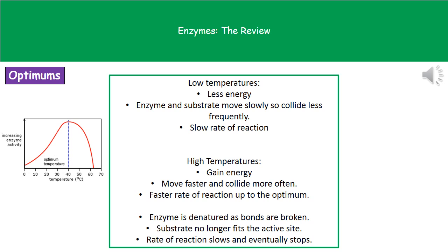We need to understand the reasons behind changes in enzyme activity at different temperatures — this could be a six-mark question with plenty of scientific detail. Looking at the graph on the left, we see the typical shape of an enzyme-temperature graph, with temperature along the bottom and enzyme activity on the side. At low temperatures, enzymes aren't very active because there's less energy, so particles move slowly, collide less frequently, and the rate of reaction is slower.